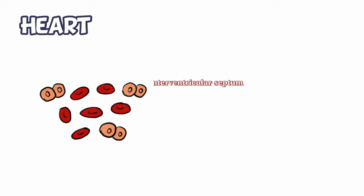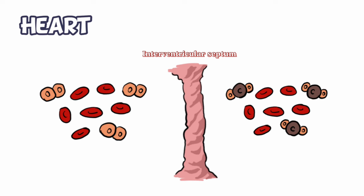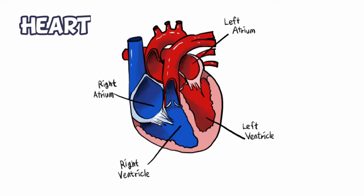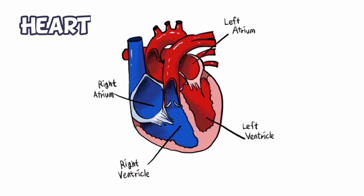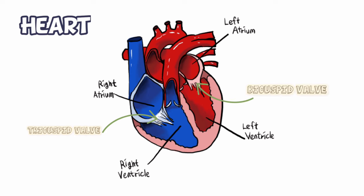These septa prevent oxygen-rich blood from mixing with the blood containing carbon dioxide. The atrium and ventricle of the same side are also separated by a thick fibrous tissue called the atria ventricular septum. However, each of these septa are provided with an opening through which the two chambers on each side are connected. The opening between the right chambers is guarded by a tricuspid valve, and the one between the left chambers is guarded by a bicuspid valve.